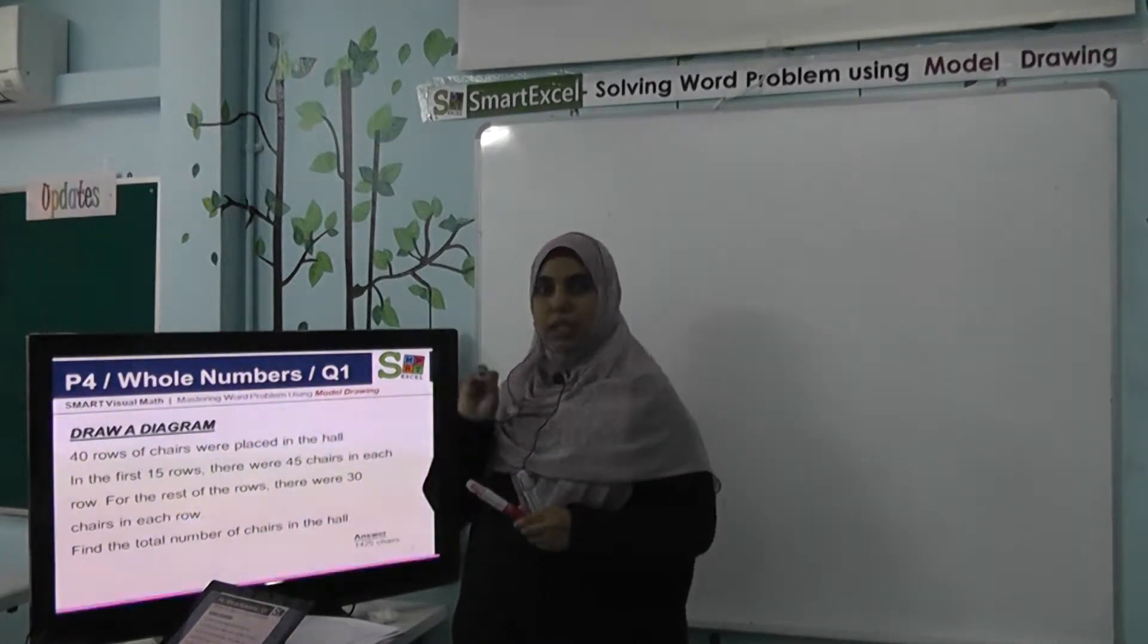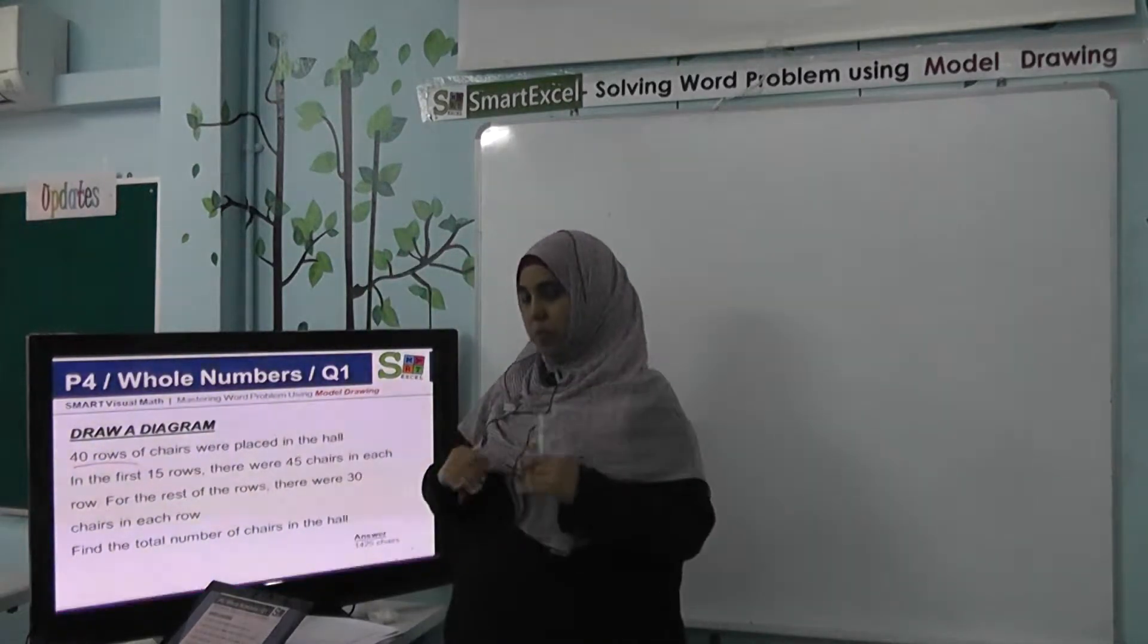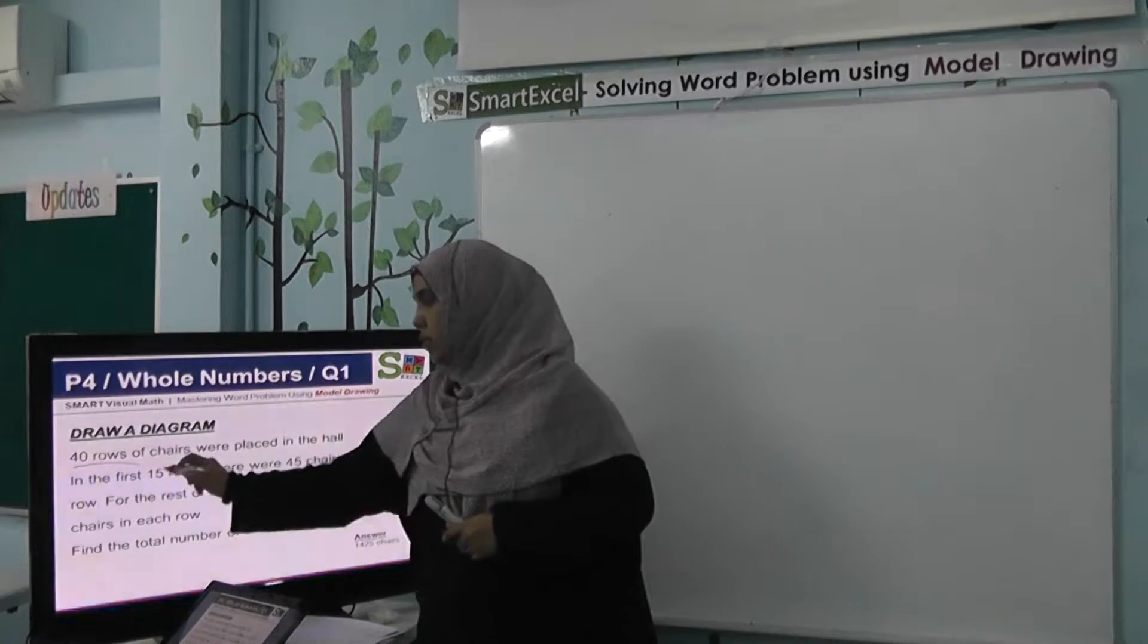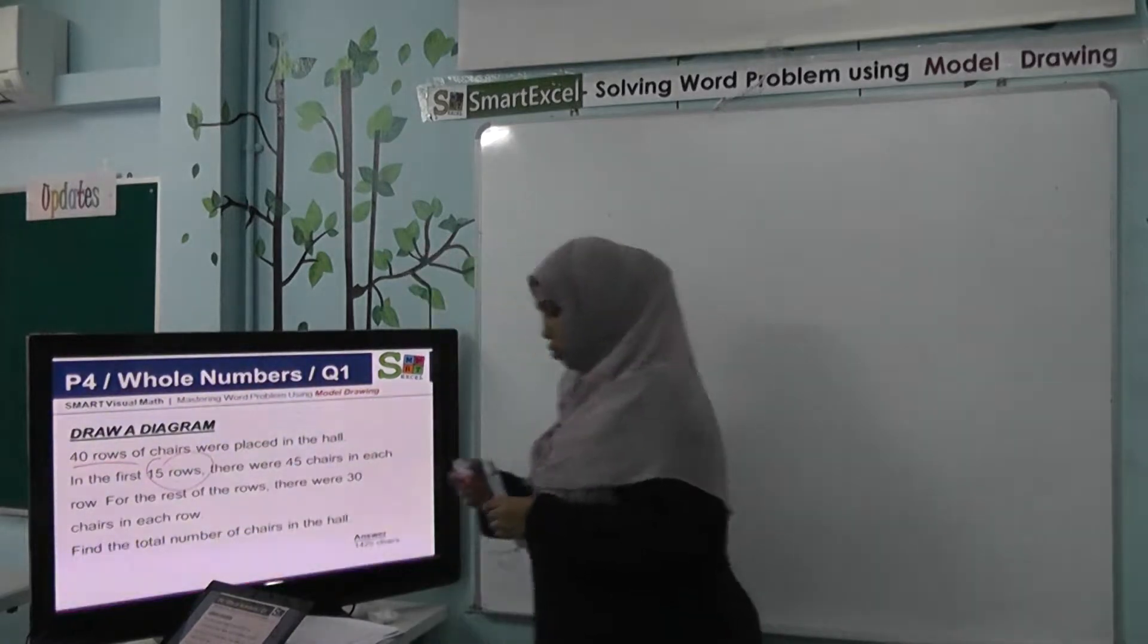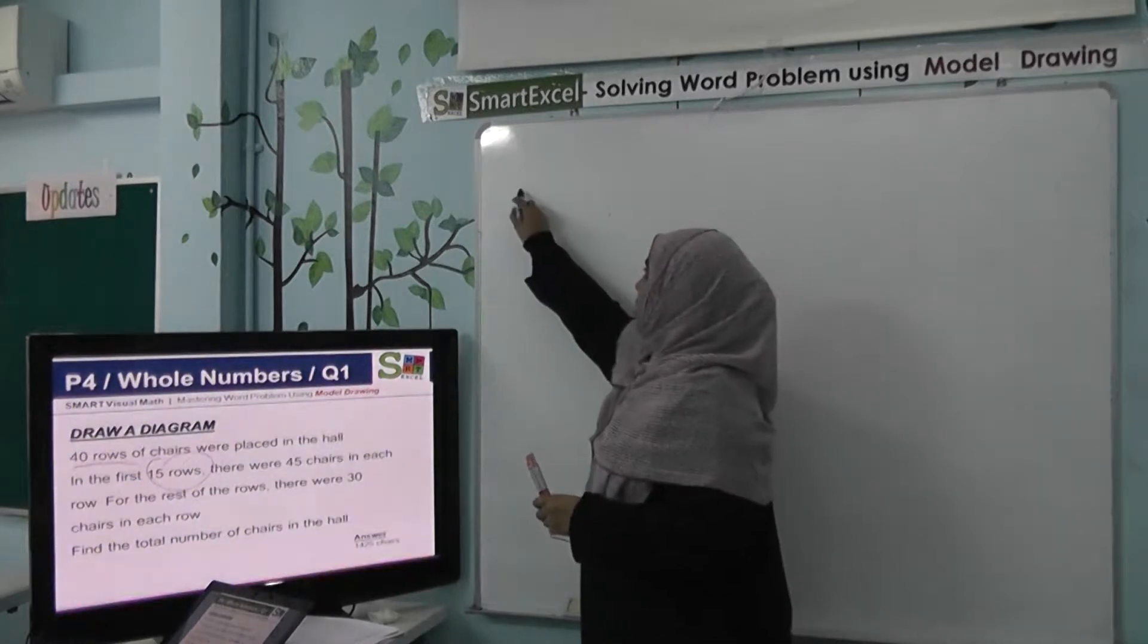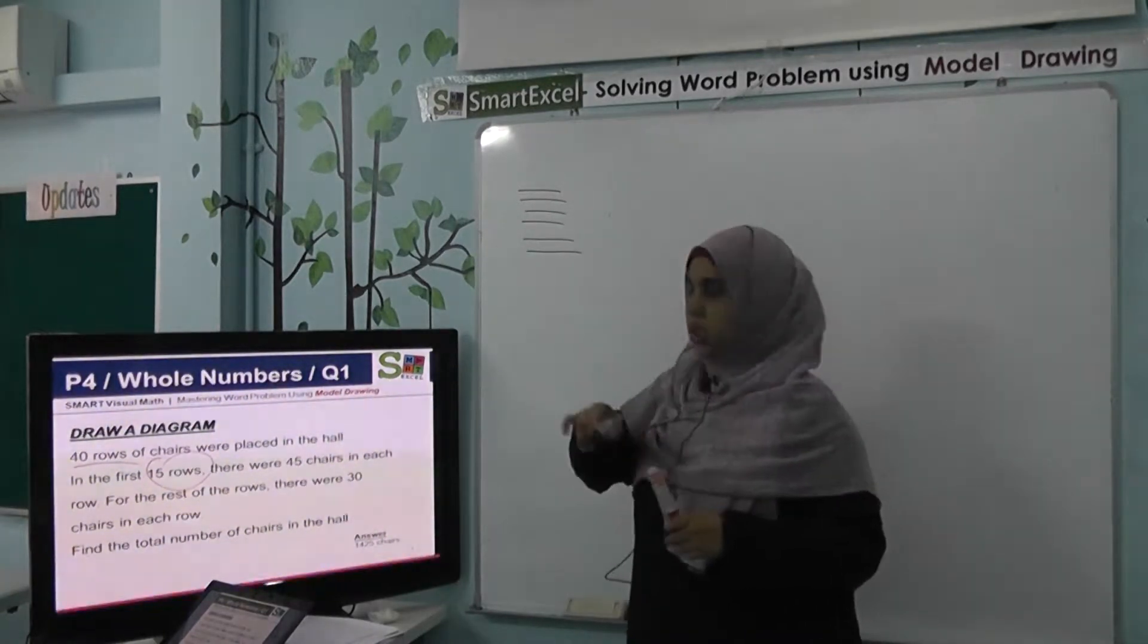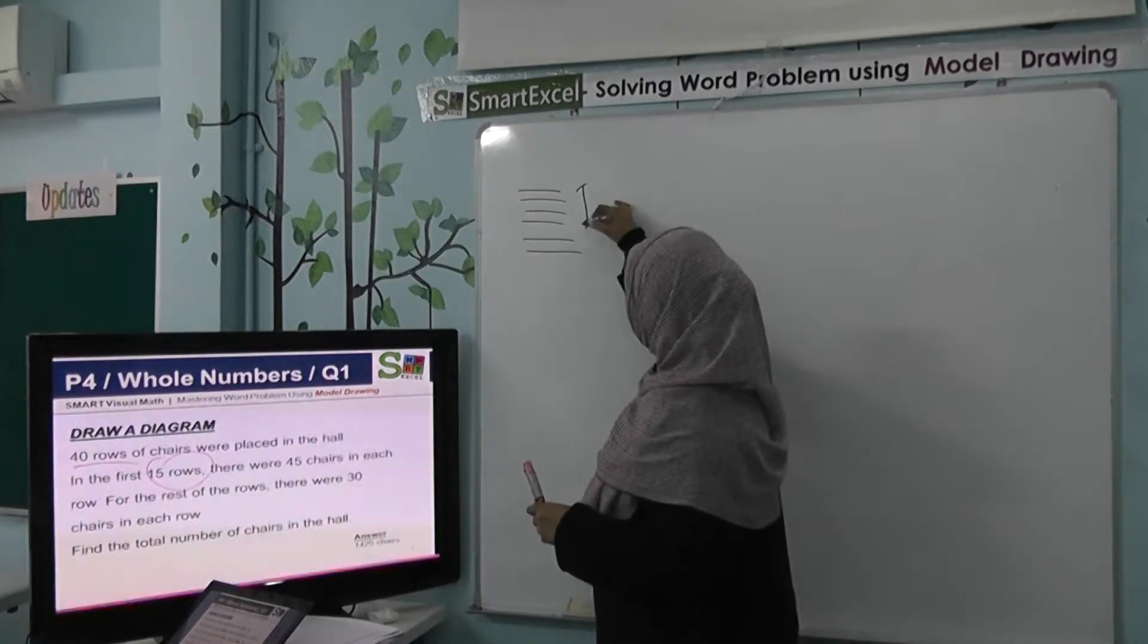Again, we pick the keywords. Now we know there's 40 rows and the first 15 rows. So if you draw the model or draw the diagram, you have rows of chairs in the hall. The first 15 rows may be from here to here.